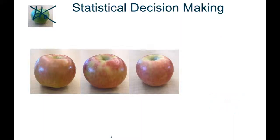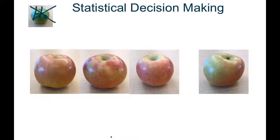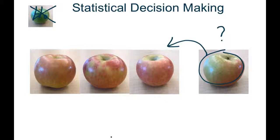New research question, new experiment. What about this apple that just showed up here? Once again we have two hypotheses we're comparing. The null hypothesis says that this apple came from this population — that would be H-sub-zero. And the research hypothesis says that it came from some other population that differs from the main population.